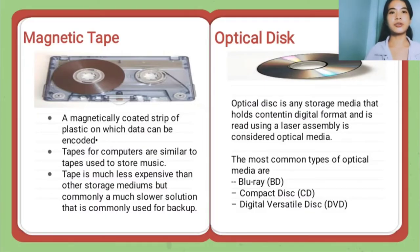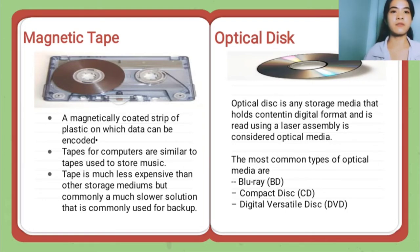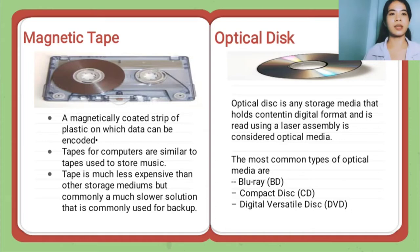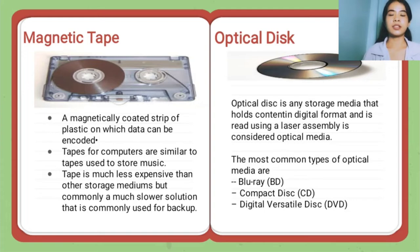An example of a tertiary storage device is magnetic tape — a magnetically coated strip of plastic on which data can be encoded. Tapes for computers are similar to tape used to store music. Magnetic tape is much less expensive than other storage media but is a slower solution commonly used for backup. Optical disk is storage media that holds content in digital format read by a laser. The most common types are Blu-ray, Compact Disk, and Digital Versatile Disk.